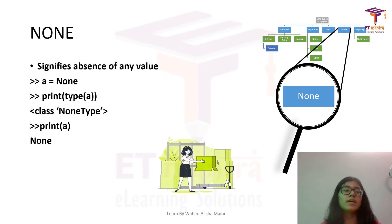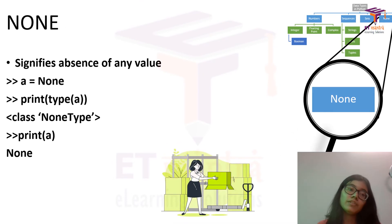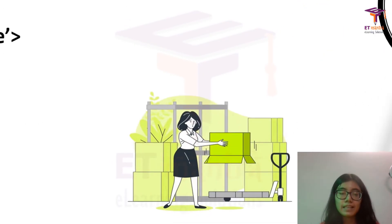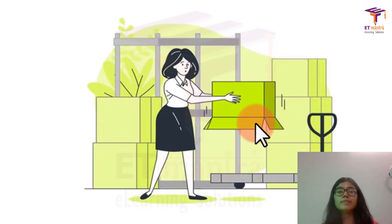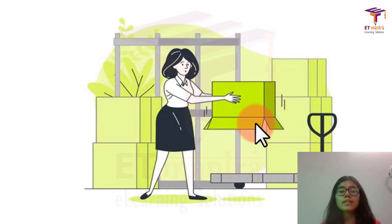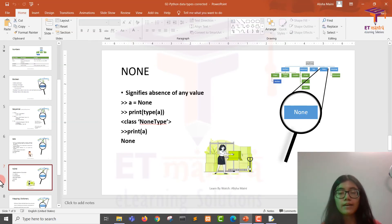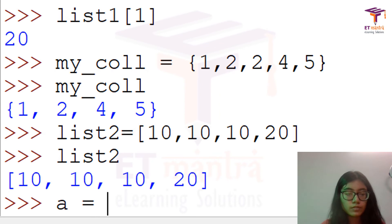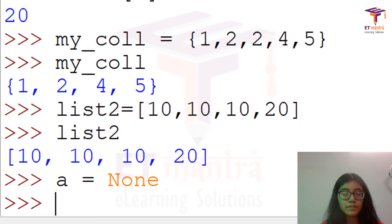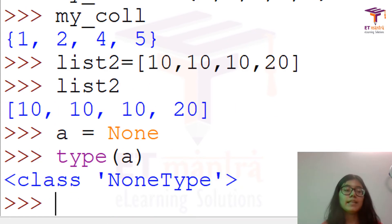Coming on to none. None means it contains nothing — like the image of a lady with an empty box, there's nothing inside. None is nothing. So you can always have a variable holding a value of none, and when you check the type of that variable, it's going to be NoneType.